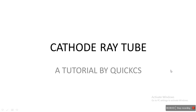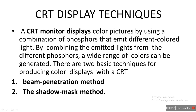Hey guys, welcome to another computer graphics tutorial. Today we will be learning about cathode ray tube, a tutorial by Kwik CS. A CRT monitor displays color pictures by using a combination of phosphors that emit different colored lights. By combining the emitted lights from the different phosphors, a wide range of colors can be generated. There are two basic techniques for producing color displays with a CRT: the beam penetration method and the shadow mask method.